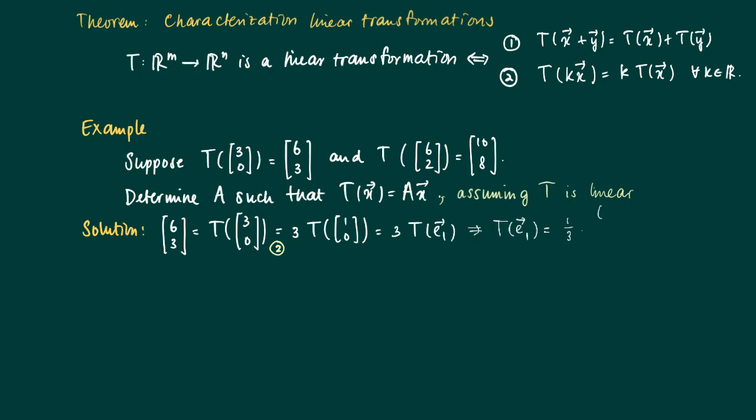So from this we deduce that T of E1 is one third times [6,3]. So T of E1 is one third of [6,3], which is the vector [2,1].